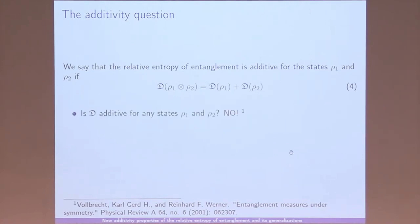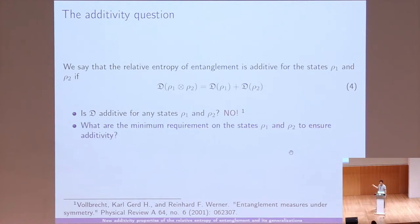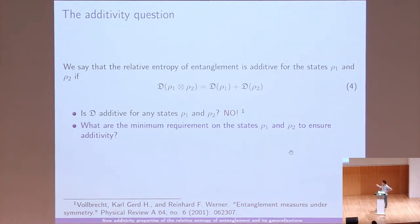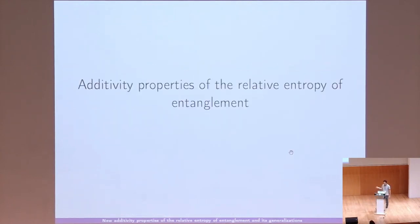We would expect that since there are no correlations, the total entanglement is just the sum of the entanglement of the parts. However, does this hold for any states ρ₁ and ρ₂? The answer is no — this was established about 20 years ago. But we are not completely lost: we can ask what are the minimal requirements on ρ₁ and ρ₂ to ensure additivity, because even though it fails in general, there are still things we can prove, with implications for specific tasks.